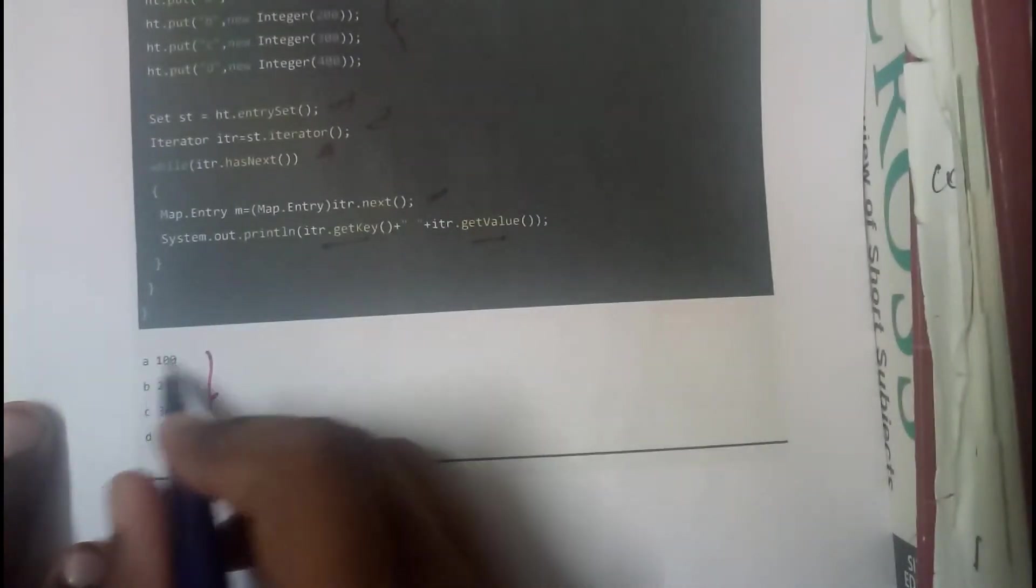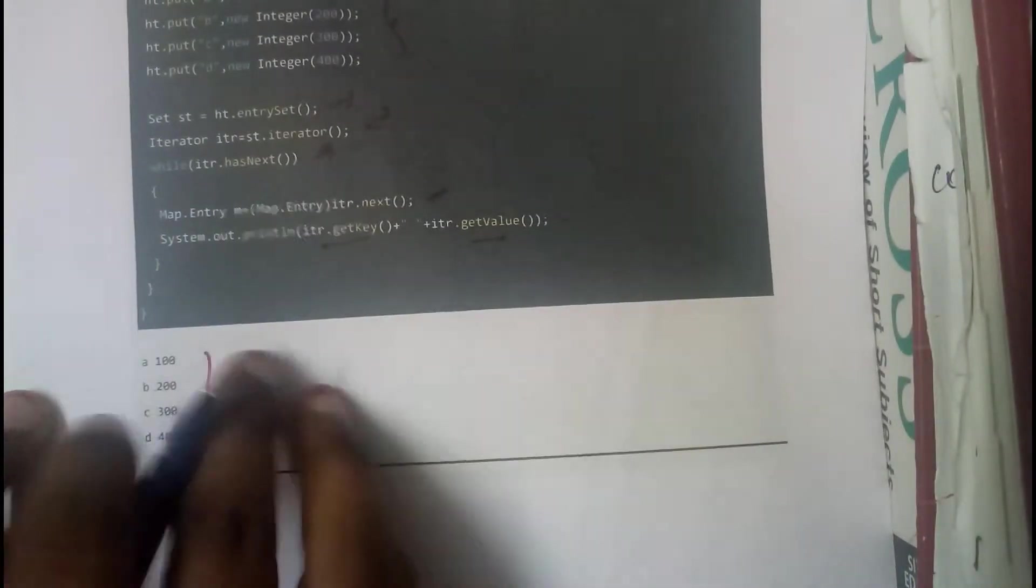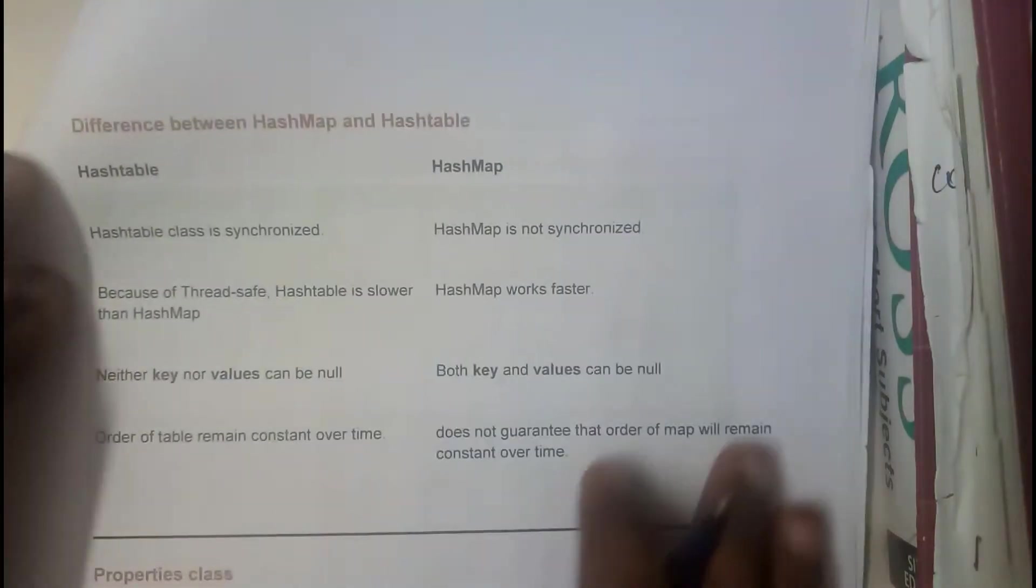These are the values: a:100, b:200, c:300, d:400.